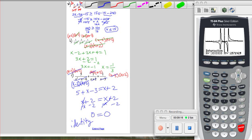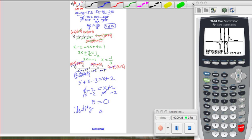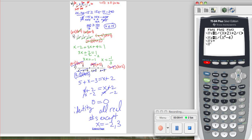The original question is true for all real numbers, except we have to realize that our denominators cannot be equal to 0. So all real numbers except x equals negative 2 and 3 cannot be the solution. Any other x can be a solution.